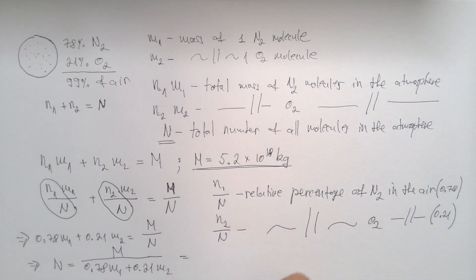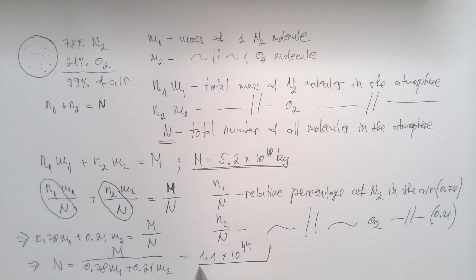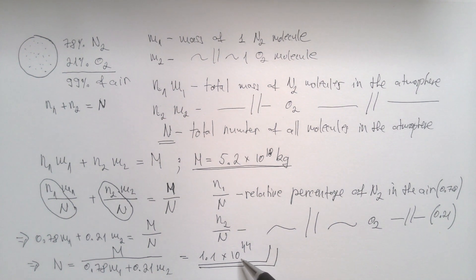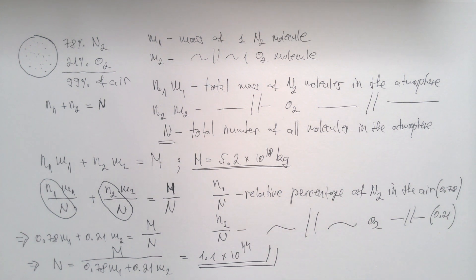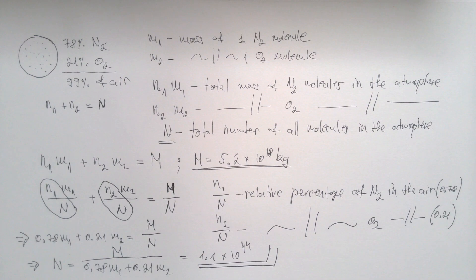If you plug in these numbers, you will get that N is 1.1 times 10 to the power of 44. There are 10 to the power of 44 molecules in this beautiful atmosphere of ours, and this result is accurate to 99%, because these two molecules make up 99% of the air.